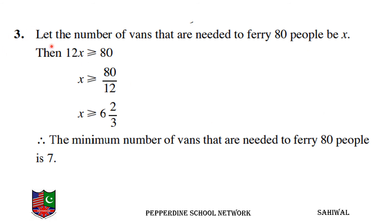For question number 3, let the number of vans needed to ferry 80 people be x. If we suppose the number of vans is x, then 12x is greater than or equal to 80, because 12 people fit in 1 van. So x is greater than or equal to 80 over 12, which equals 6 and 2 over 3.